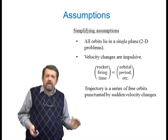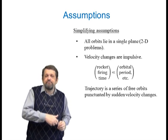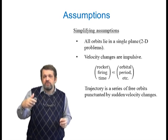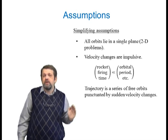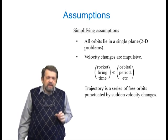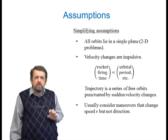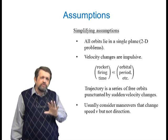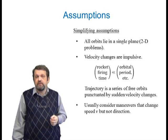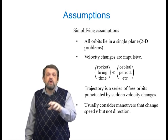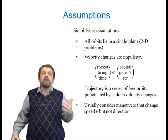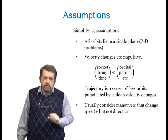This assumption means that our trajectory is a series of free conic-section orbits connected by sudden velocity changes due to the application of rocket thrust. Another assumption we'll usually make is that rocket thrust changes the speed but not the direction of travel — either we increase or decrease our speed. That covers a lot of really interesting cases.